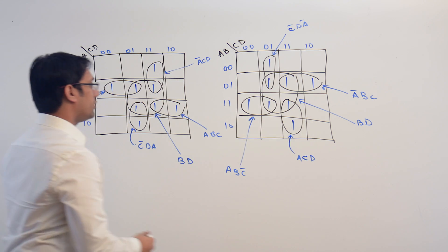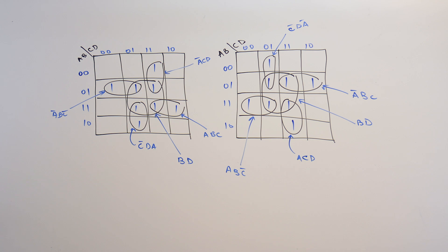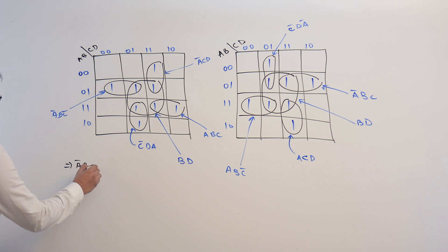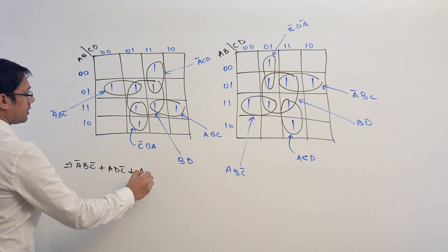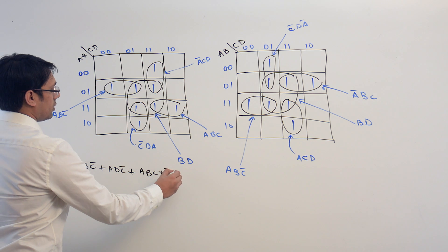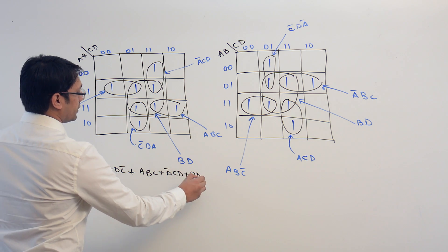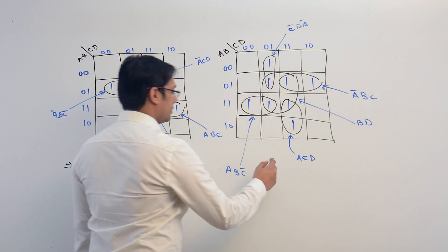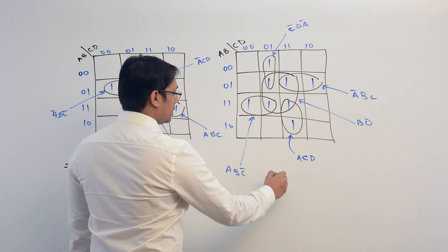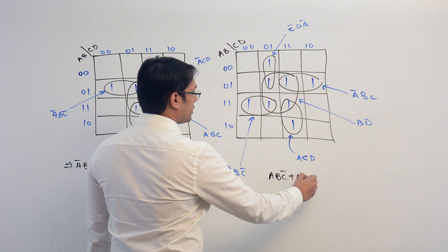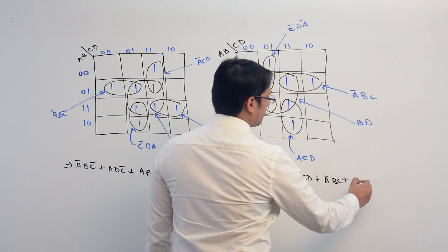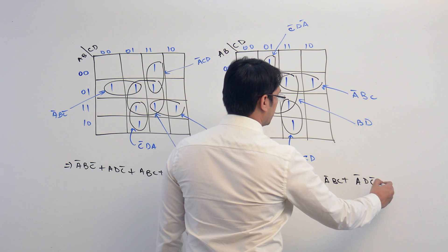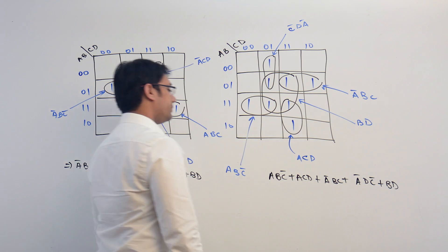Therefore, the solution equation for the first K-map can be: A complement, B, C complement plus A, D, C complement plus A, B, C plus A complement, C, D plus B, D. In the same way, the solution equation for the second K-map can be: A, B, C complement plus A, C, D plus A complement, B, C plus A complement, D, C complement plus B, D.